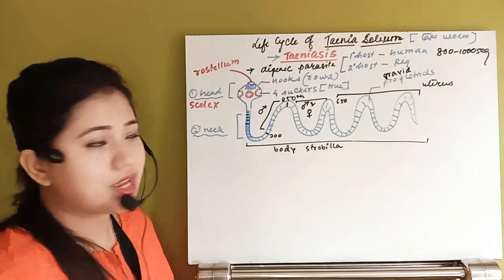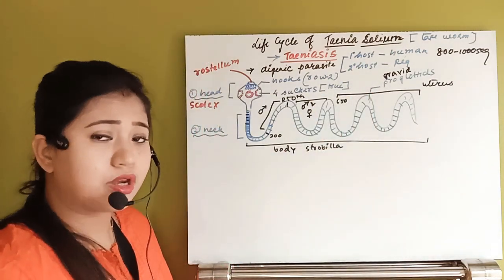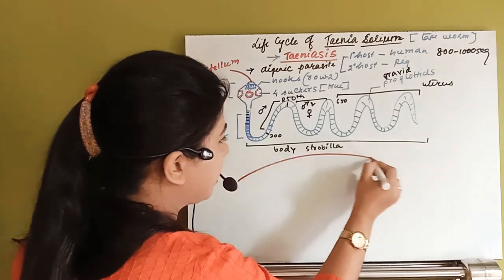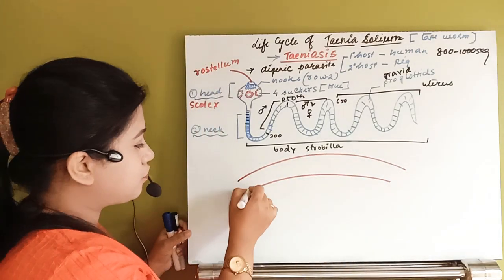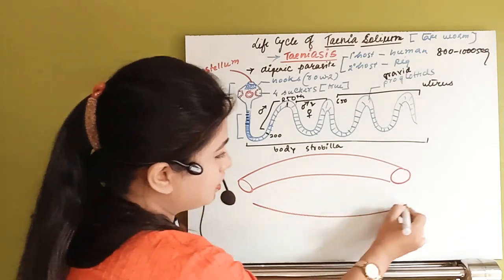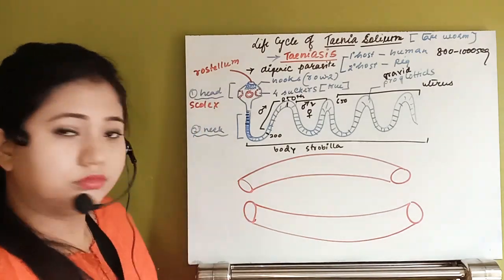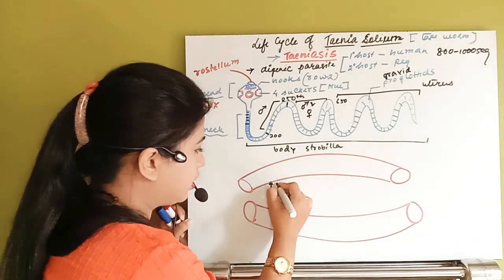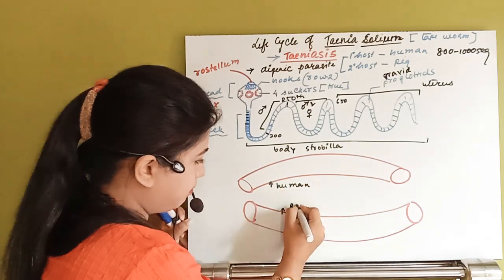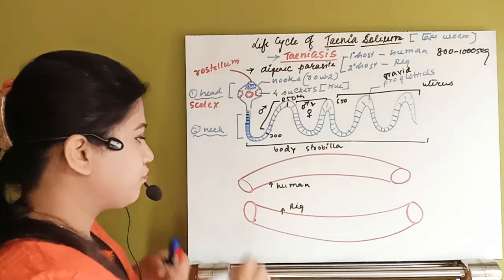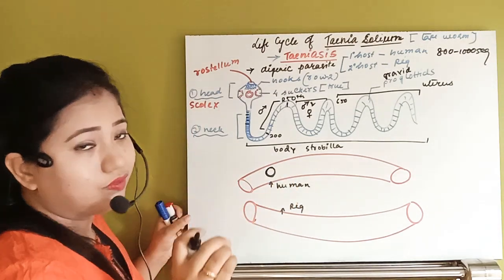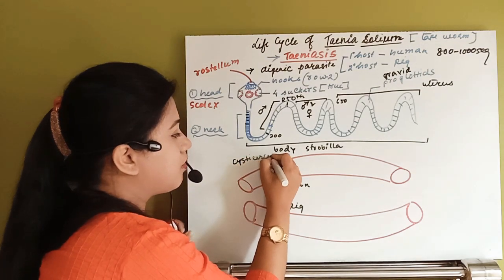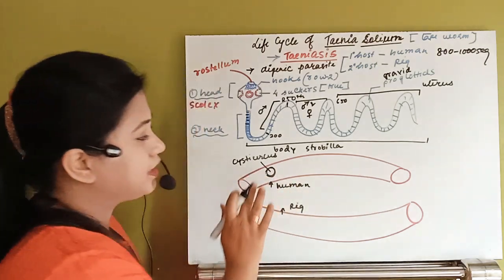Taenia solium completes its life cycle in two hosts: the primary host is human and the secondary host is pig. Now let's see the life cycle. I will draw the alimentary canals — this is the human alimentary canal and this is the pig alimentary canal. In the human GI tract, the last larval stage present is the cysticercus larva.